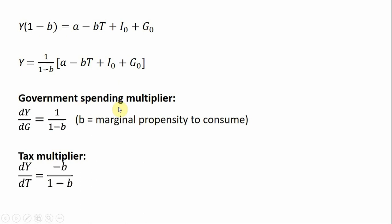To get the government spending multiplier, we will take the derivative of Y with respect to G. Taking the derivative of income with respect to government spending, we get 1 divided by 1 minus B. The derivative of G is 1, and that's being multiplied by 1 divided by 1 minus B. The derivative of everything else is zero — we're treating that as a constant. So that is our government spending multiplier.